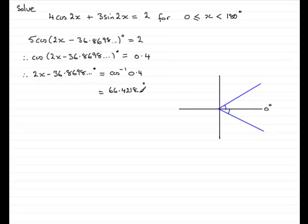So what does this mean? Well, it means that this angle in here is 66.4218 degrees. And it also means, because we've labelled this, and this has been the same size, it means that this angle in here is also 66.4218 degrees.